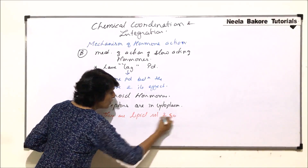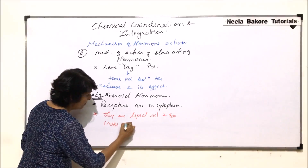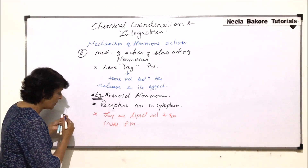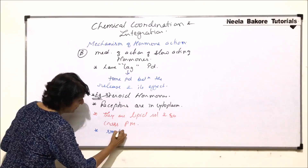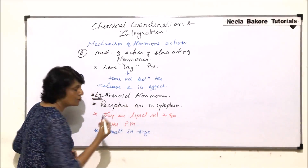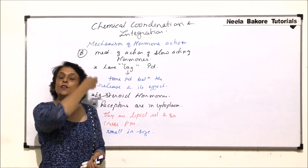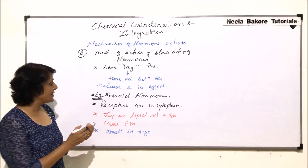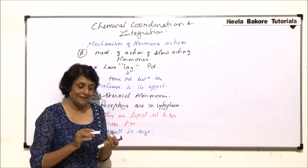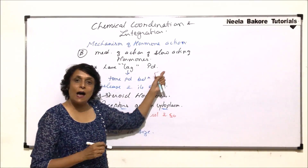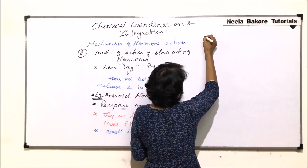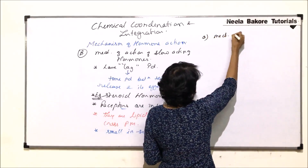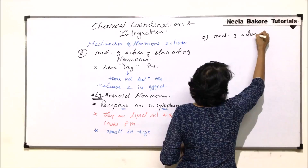Since they are lipid soluble, they can cross the plasma membrane, and that is why their receptors are inside the cytoplasm. One more important feature: they are smaller in size, and so are able to cross the plasma membrane. Everything favors their entry into the cytoplasm, and because they enter the cytoplasm, their receptors should also be in the cytoplasm. To understand how they work, we will take one example — the working of estrogen, the mechanism of action of estrogen.